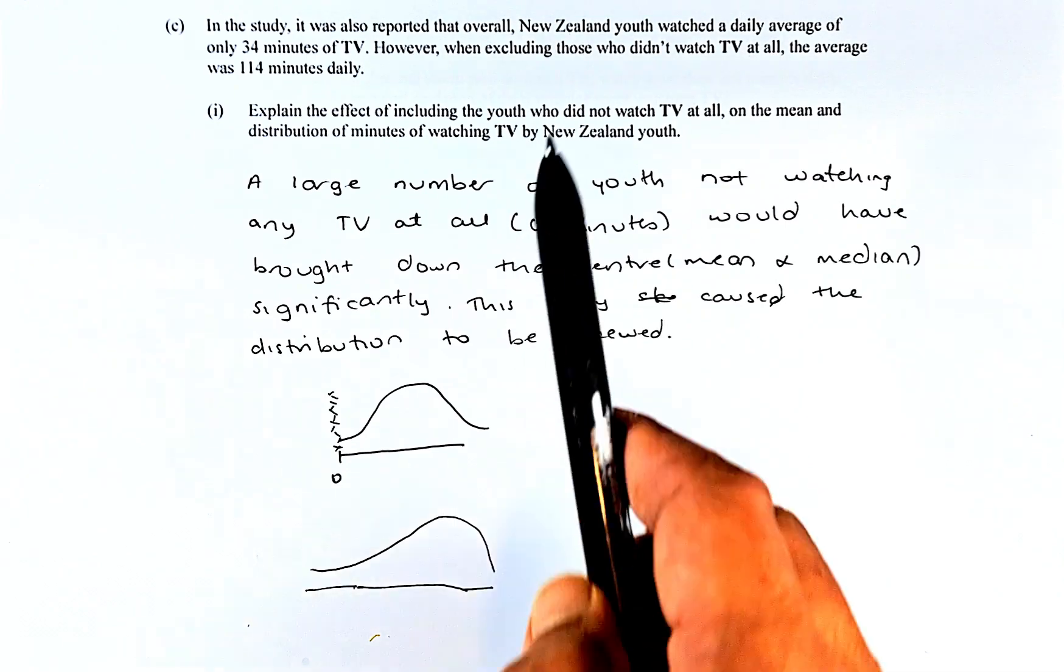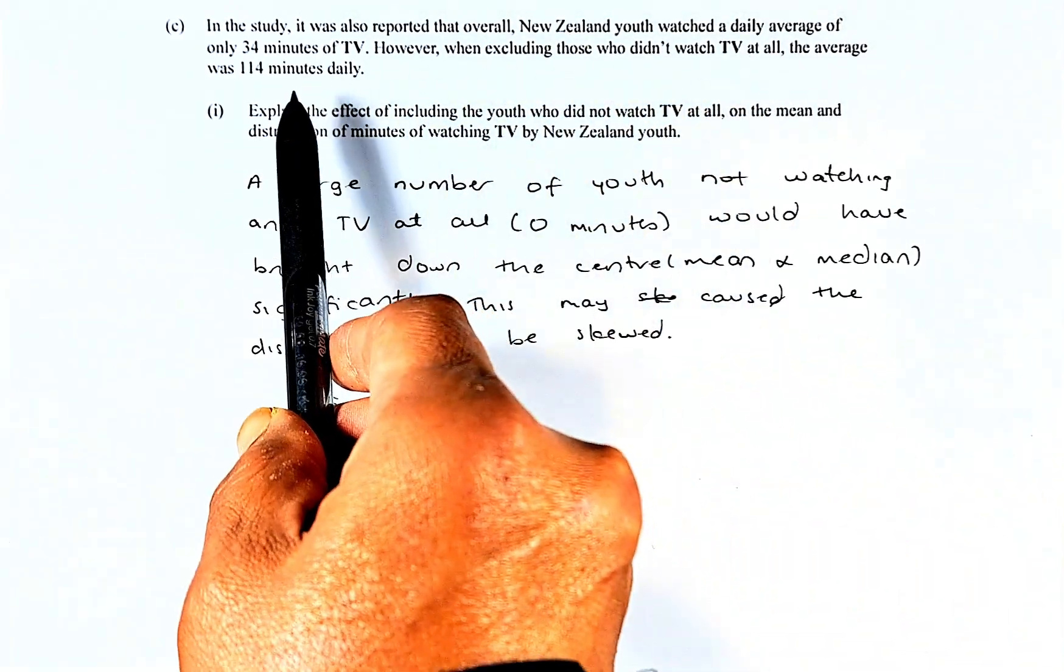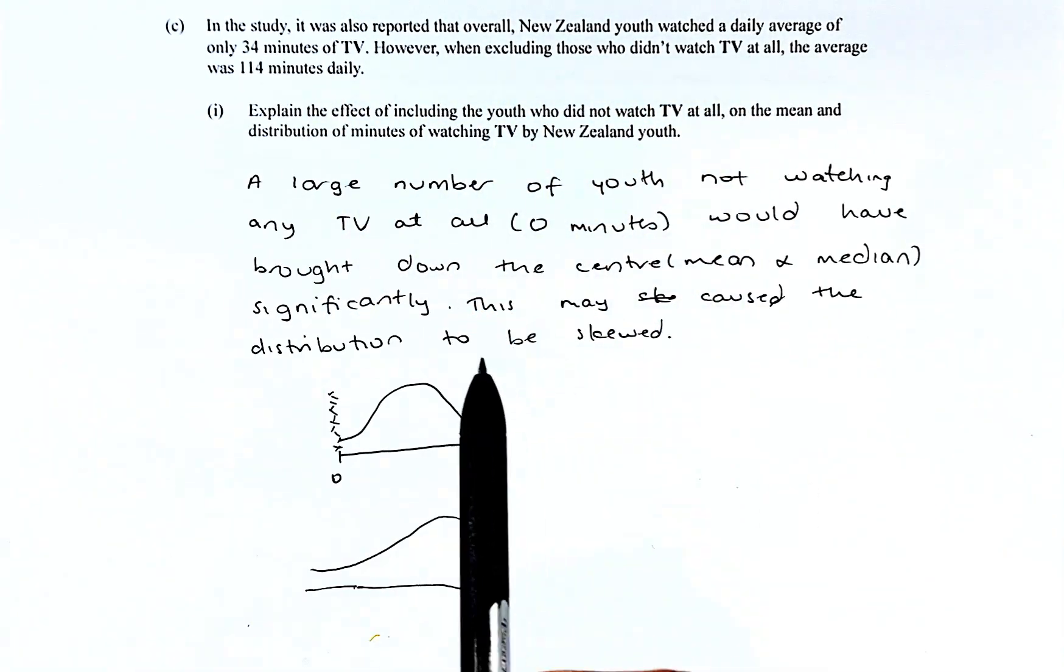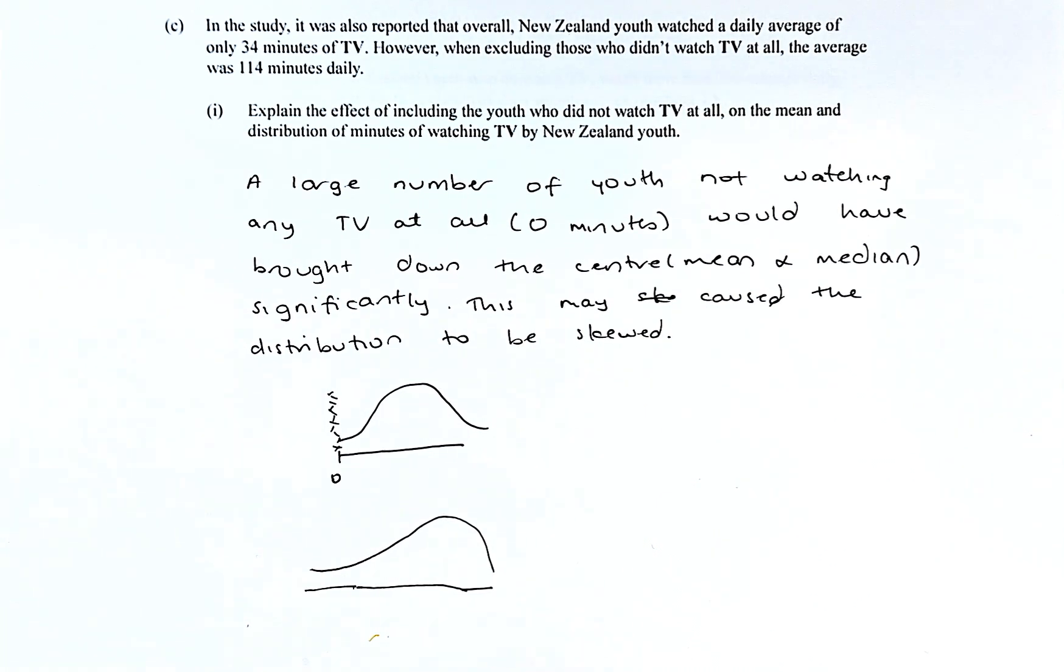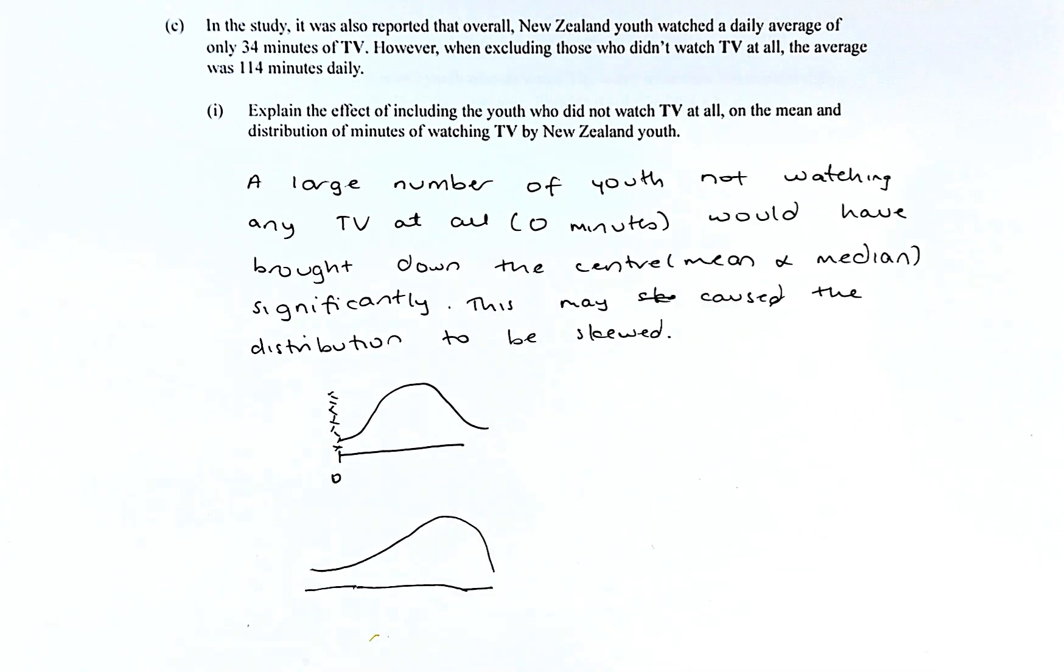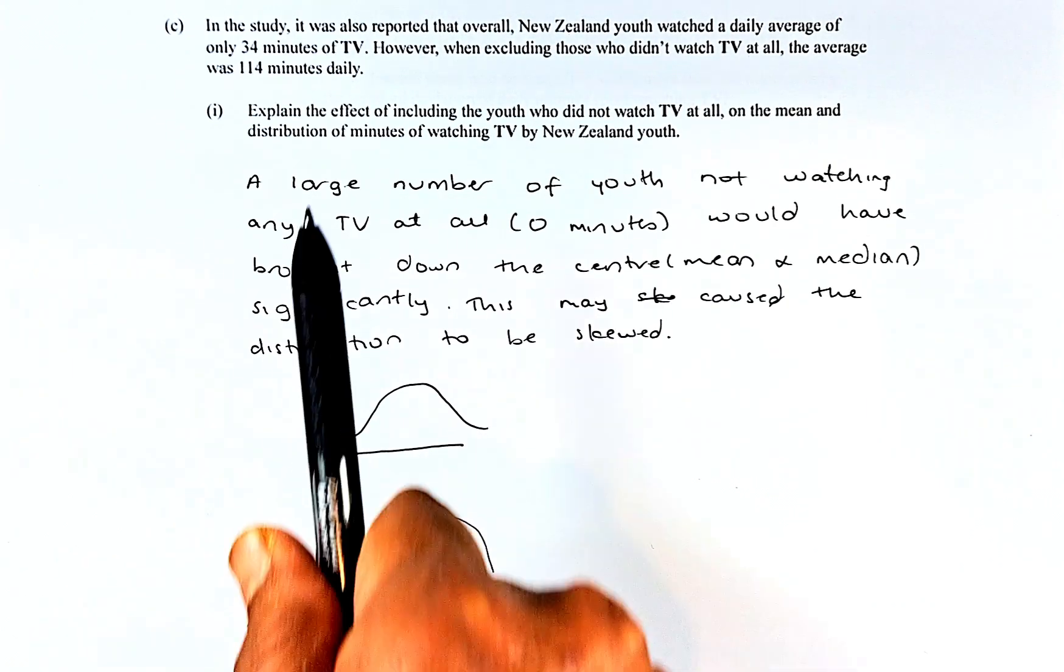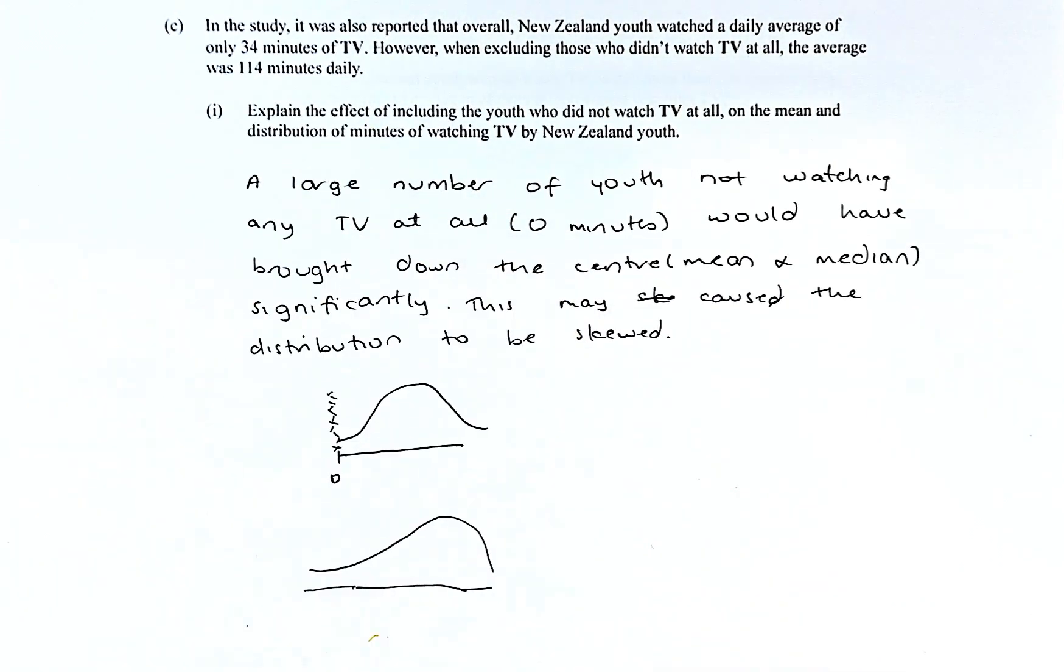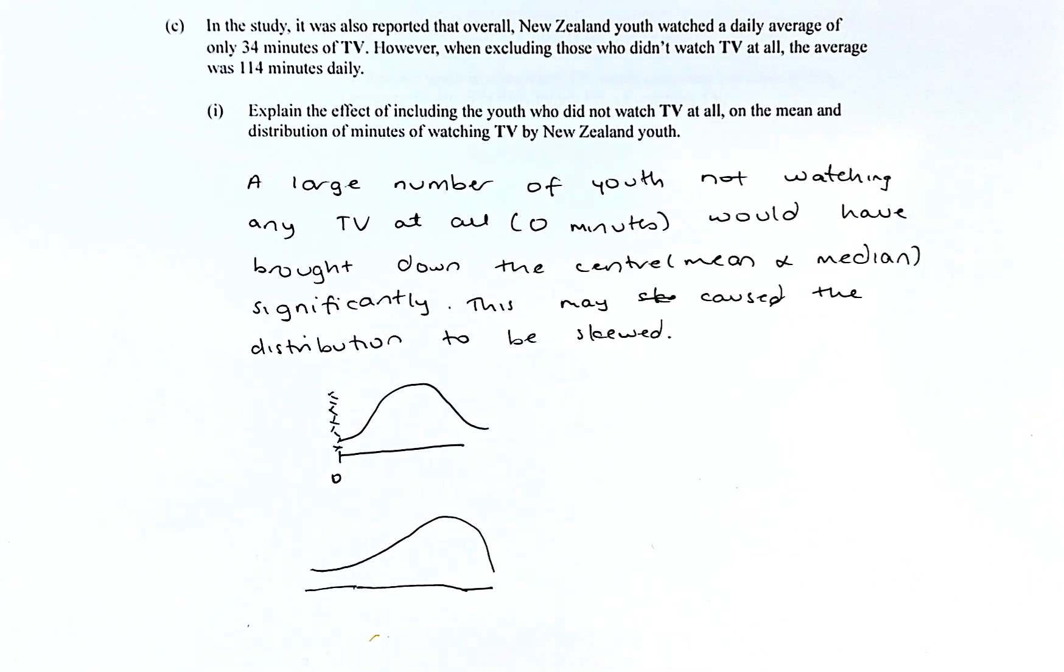So when we exclude them, the average was 114. When we include them, the average was only 34 minutes. So if you include the youth who did not watch TV or zero minutes at all, the mean and the median or the center would drop dramatically from 114 minutes to 34 minutes. So by including them, it will drop the numbers of the mean and the median.